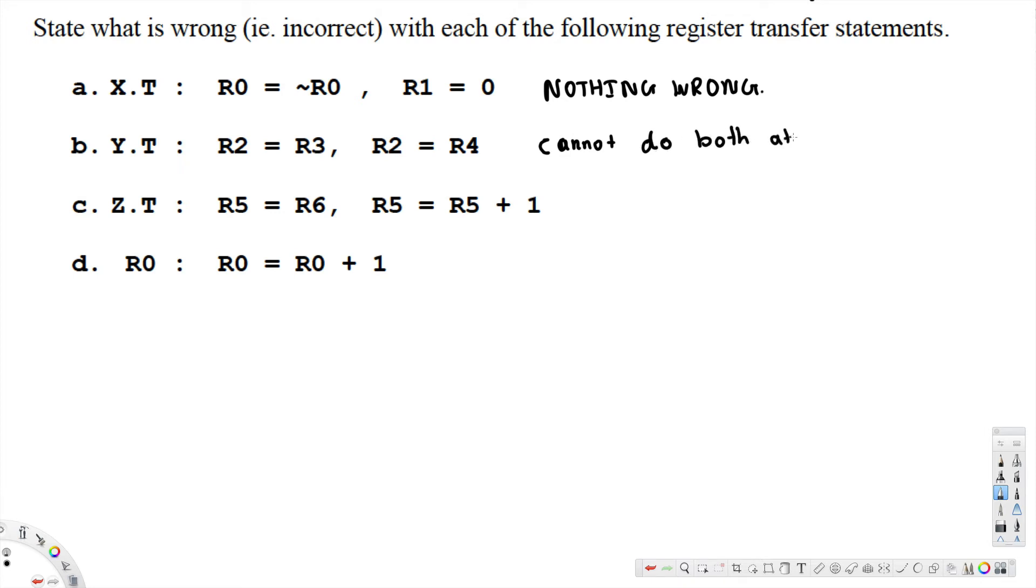And here's Z.T: R5 is equal to R6, R5 is equal to R5 plus R1. Here again, cannot do both at the same time.